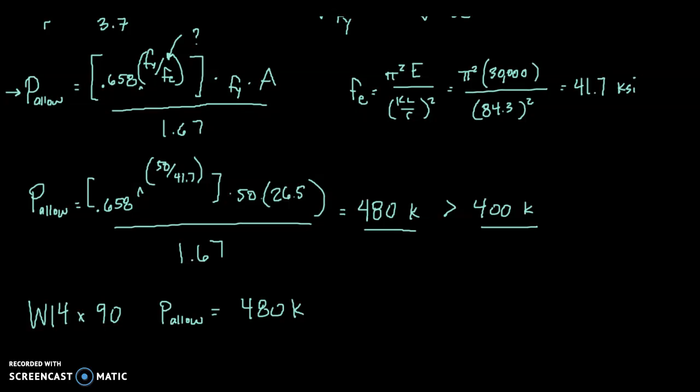So if I go to the appendix and look at the next smallest column—we were limited to a W14 in the problem statement—I would say, okay, a W14 by 90 works. How about a W14 by 74? Does that work?